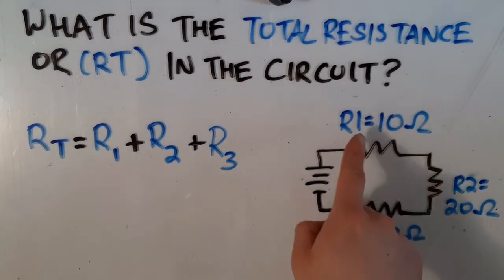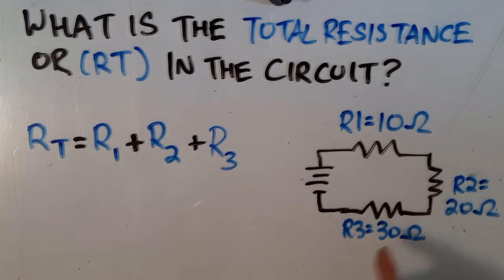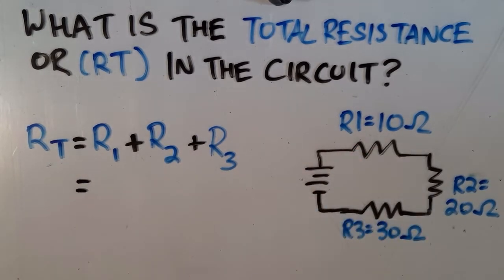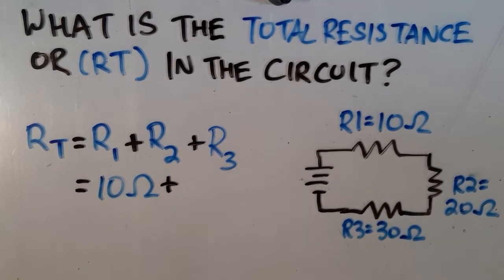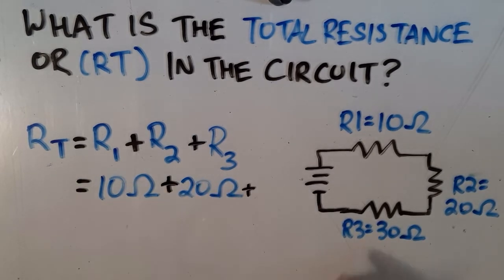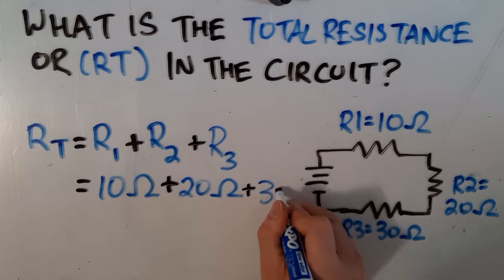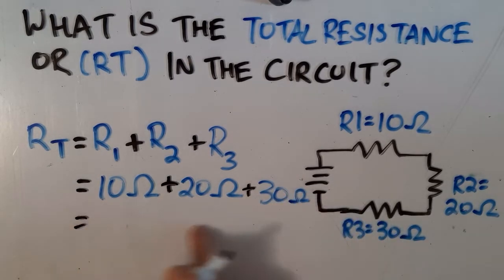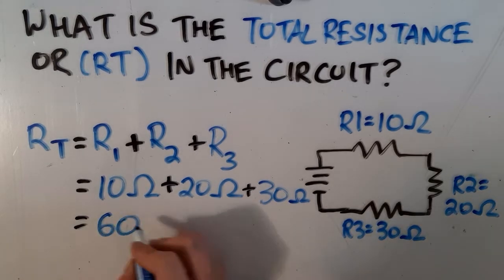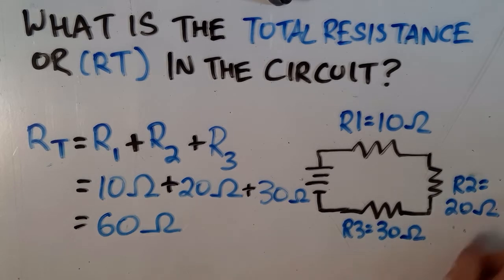So in this case, it's R1 plus R2 plus R3, because the current has to flow through all three of them. R1 is 10 ohms, added to 20 ohms, added to R3 which is 30 ohms. 10 plus 20 plus 30 is 60 ohms — the total resistance in the circuit is 60 ohms.